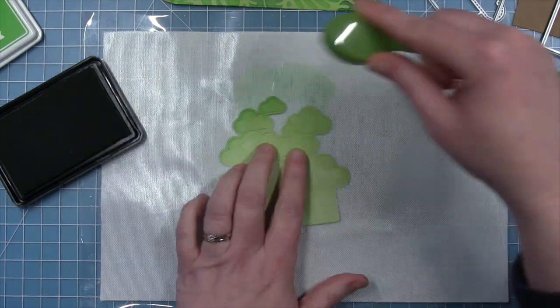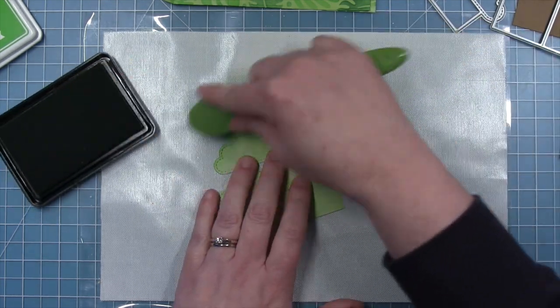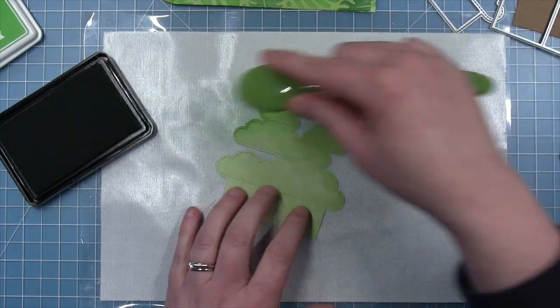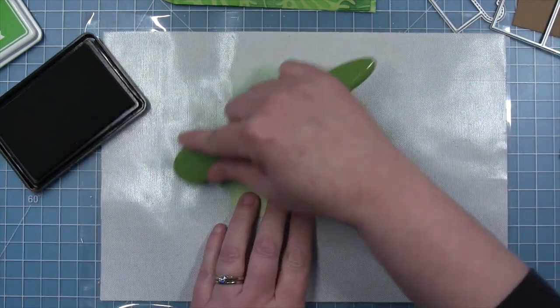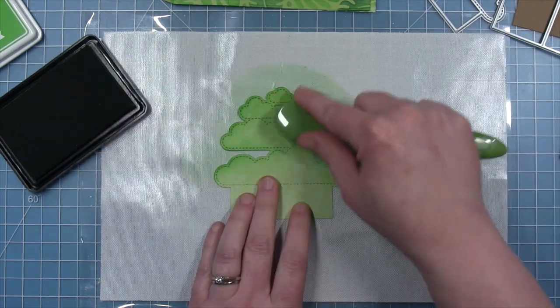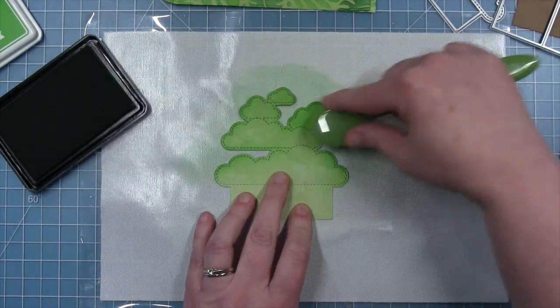Now I also wanted to make my tree canopy, which is the cloud insert here, match the outside. So I'm using my jalapeno ink and my blending brush to just kind of touch the edges of that and darken them up.